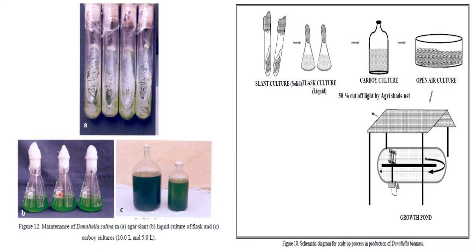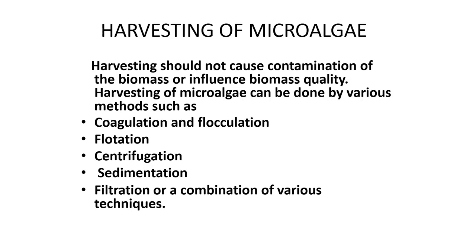From the test tube, these algal cultures can be mass-multiplied into a conical flask, then transferred to the corbicle culture, then from the corbicle culture to open air culture, and from there to a growth pond. The final stage of microalgal cultivation in the conventional method is harvesting. Harvesting should not cause contamination of the biomass or influence biomass quality. Harvesting microalgae can be done by various methods such as coagulation and flocculation, flotation, centrifugation, sedimentation, and filtration, or a combination of various techniques.